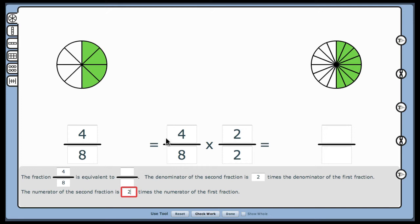The denominator of the second fraction is 2 times the denominator of the first. Whatever I do to the denominator, I do to the numerator.